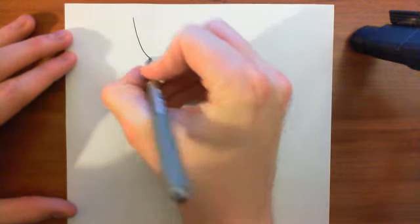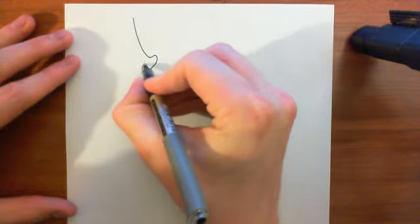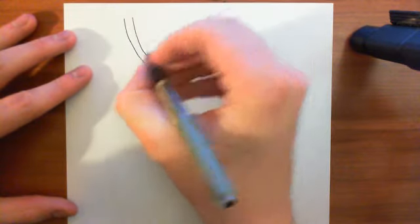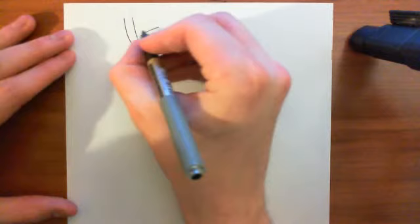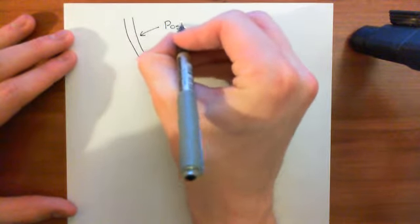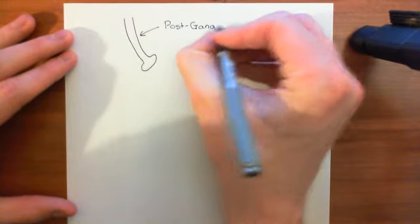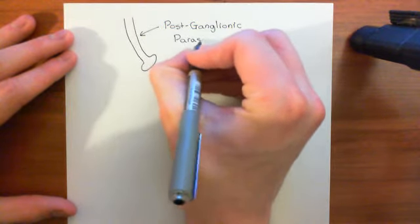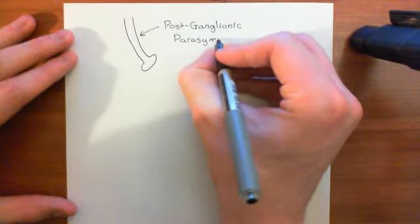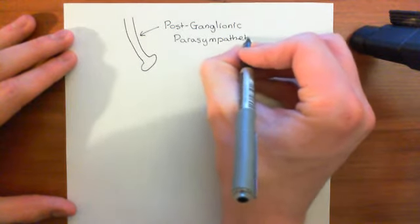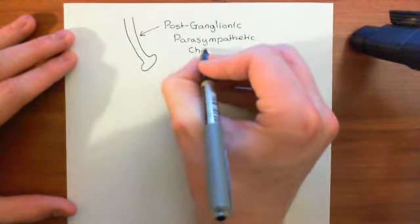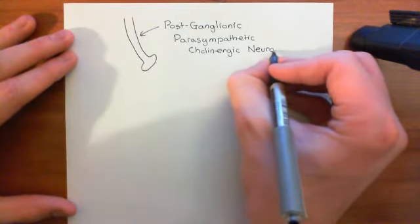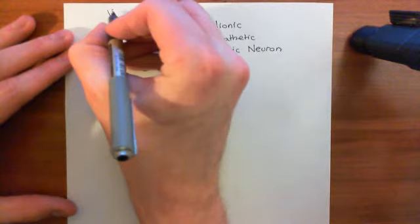So let's say we have here our post-ganglionic parasympathetic neuron and here's its axon terminal right at the end. So this is some post-ganglionic neuron - the neuron after the parasympathetic ganglion - and it's parasympathetic, so it's part of the rest and digest system. It's also cholinergic, which means it's going to be secreting acetylcholine. So: post-ganglionic, parasympathetic, cholinergic neuron, and it's coming from the vagal nerve.